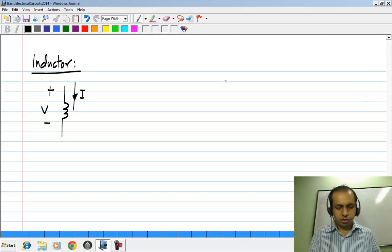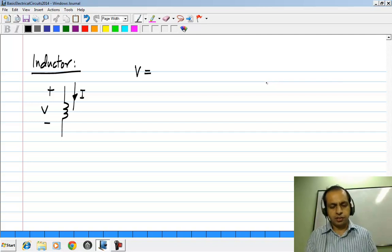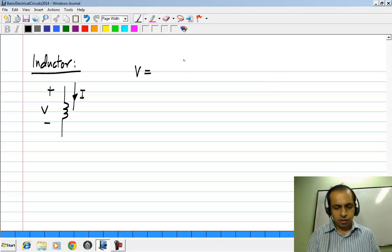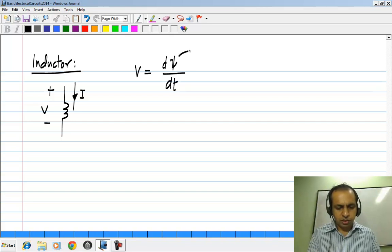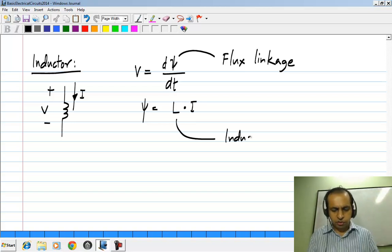It turns out that the voltage across an inductor is related to the flux linkage stored in the inductor. It is given by this relationship where this psi is the flux linkage, and psi itself is proportional to I through a proportionality constant which is known as the inductance.